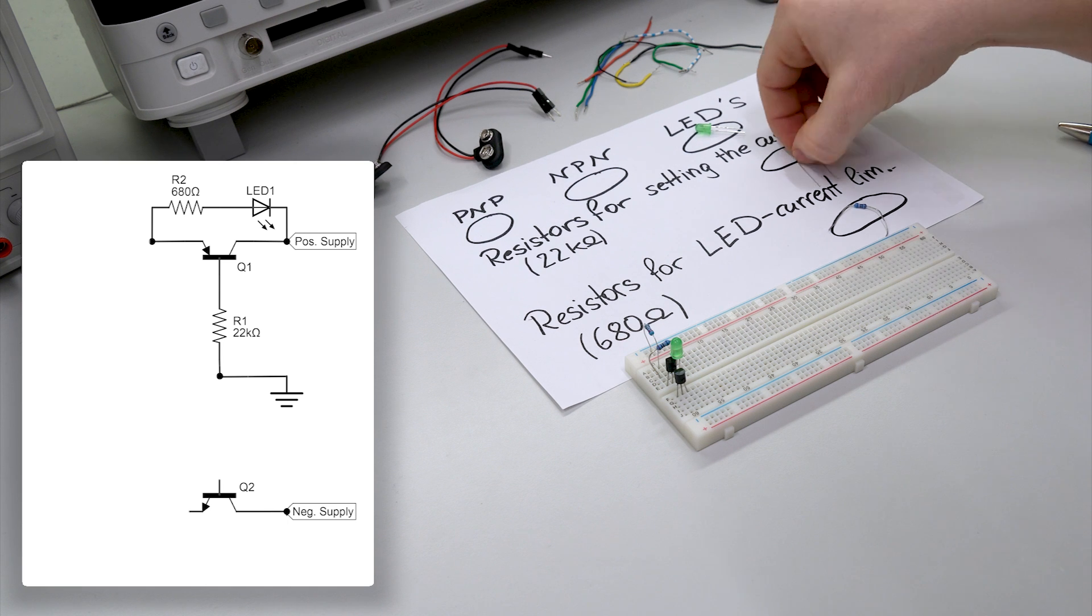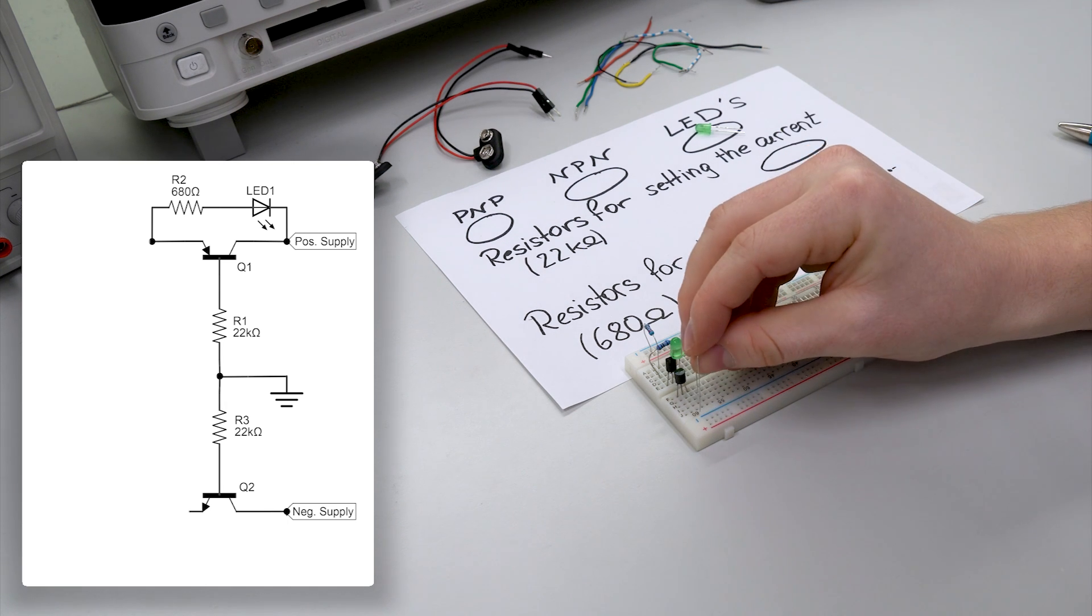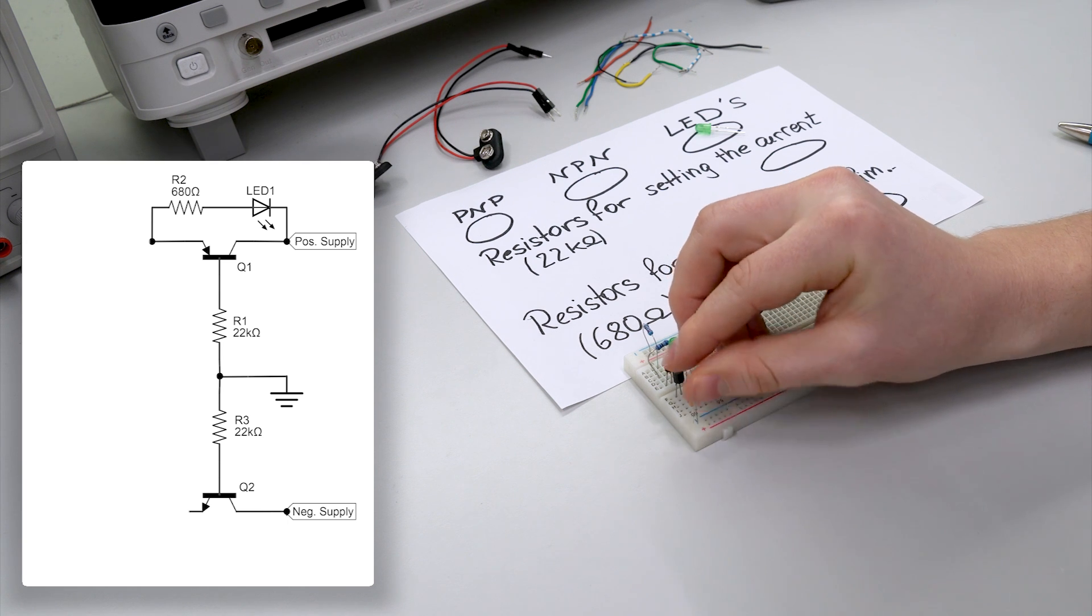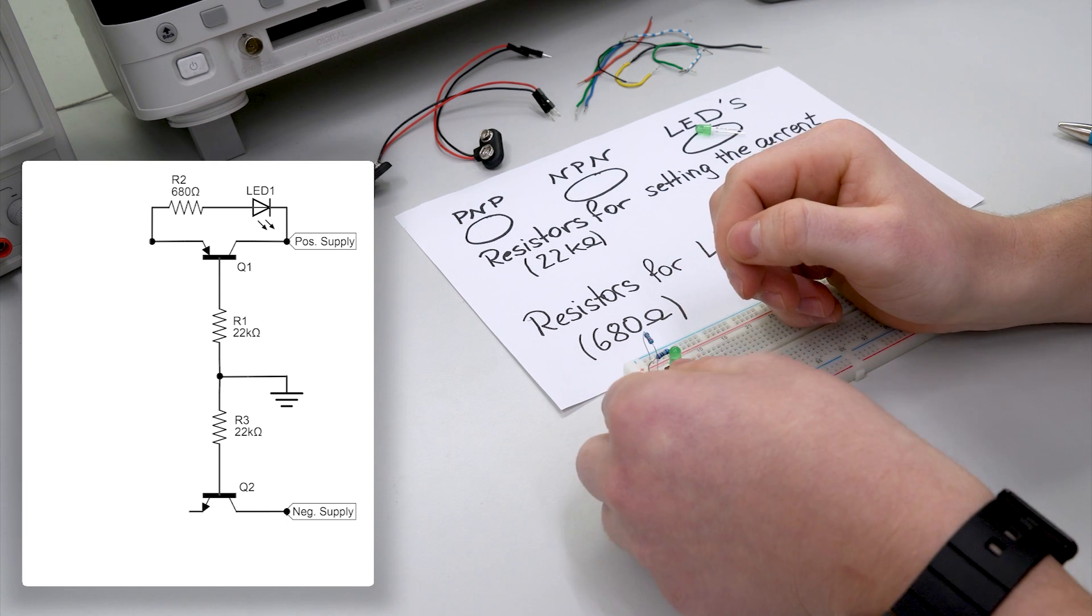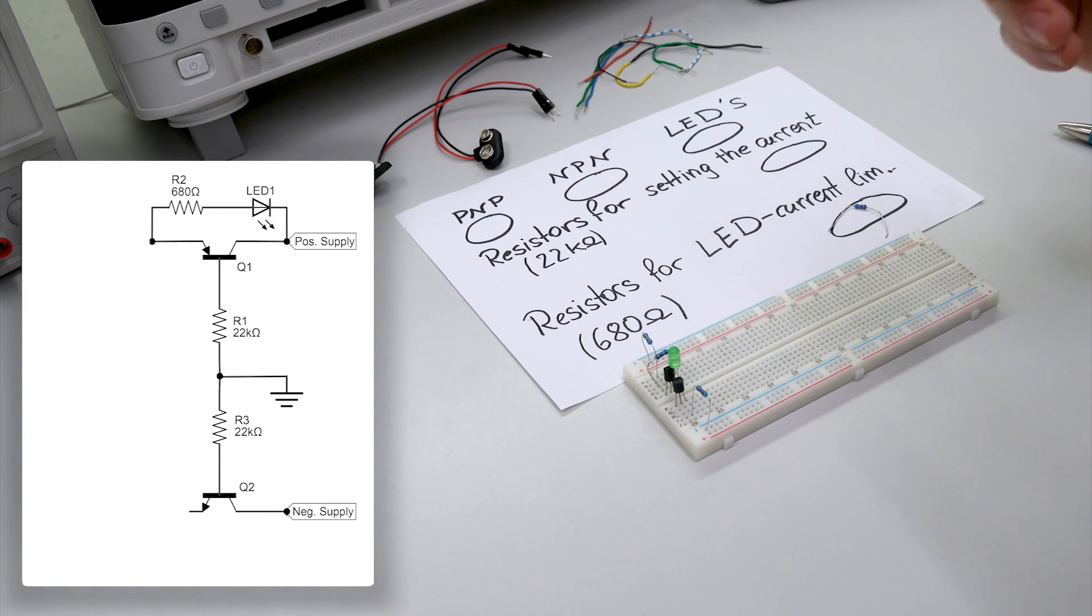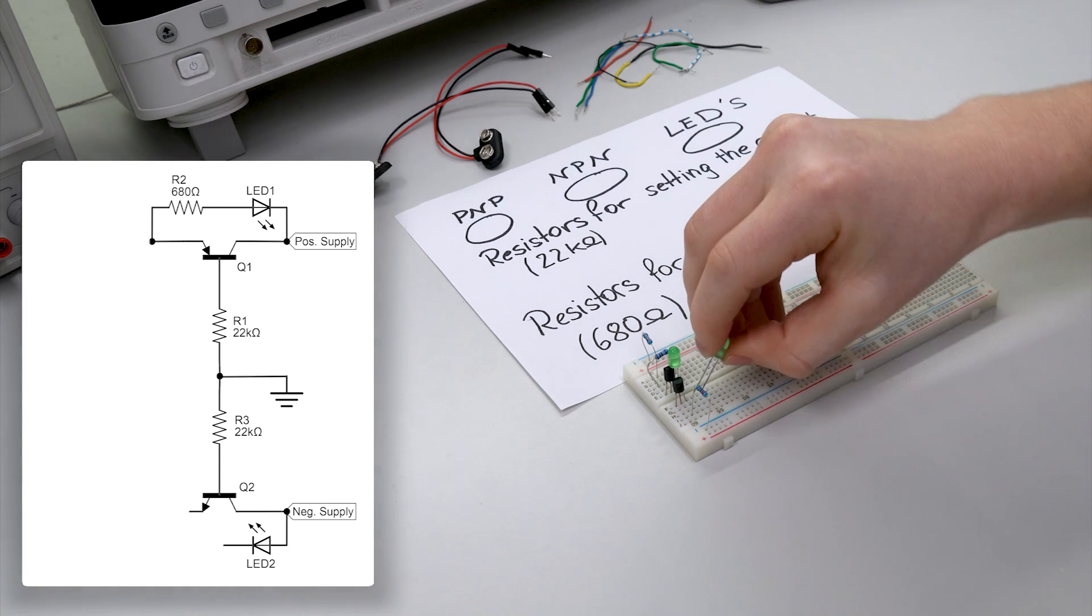Now we take another current limiting resistor and connect the base again to ground. Now the LED. Now the anode should be placed at the collector.